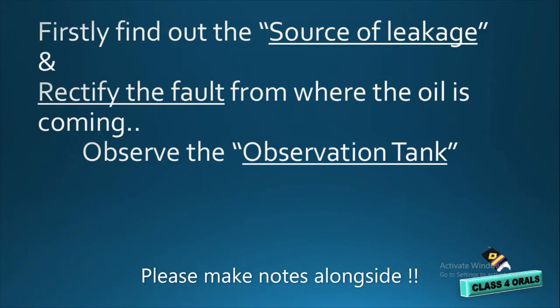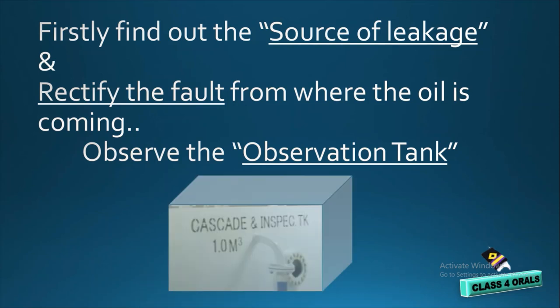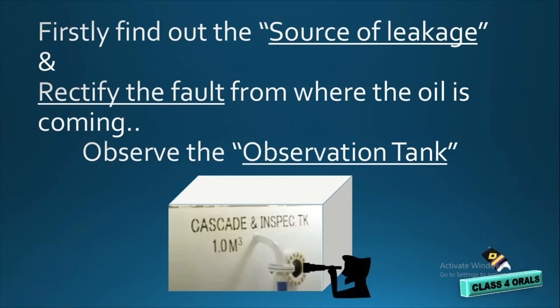First of all, we have to find out the source of leakage and then we have to rectify the fault from where the oil is coming. And in the cascade tank, we have to observe the observation tank properly.